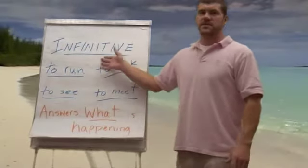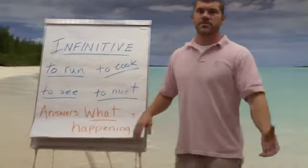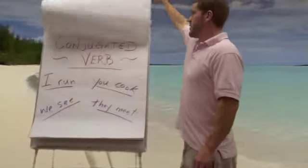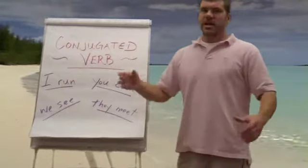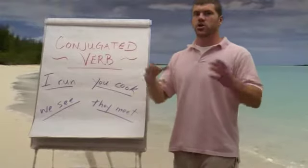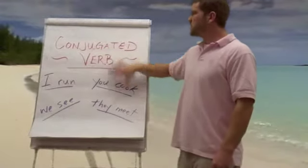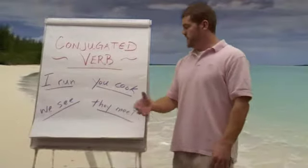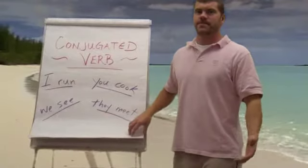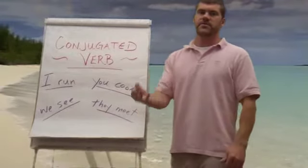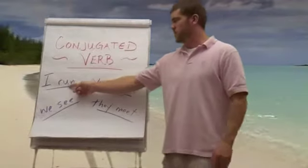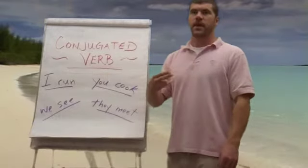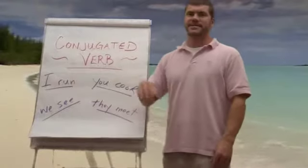You have to change this infinitive in order to fit your purposes — like you have to train a wild horse to serve your purpose. When you change the infinitive, you conjugate it. The conjugated verb is no longer 'to run,' but it's 'I run,' 'you cook,' 'we see,' 'they meet.' This gives you three pieces of information: it gives you what's happening — running — who it's happening to — I — and when it's happening. This is the present tense.